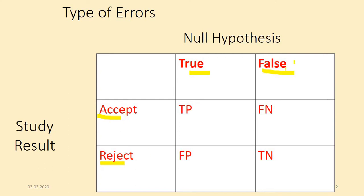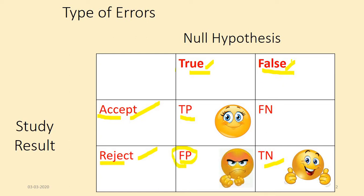When the null hypothesis is false and you reject it correctly, then it is called true negative. When the null hypothesis is true and you accept it, that is called true positive. When the null hypothesis is true and you reject it, that is called false positive. When the null hypothesis is false and you accept it, that is called false negative.